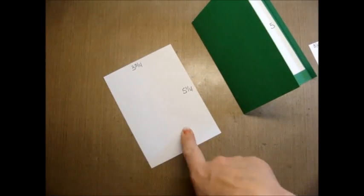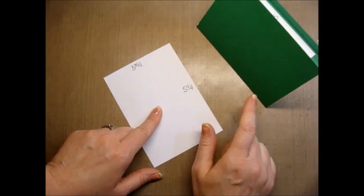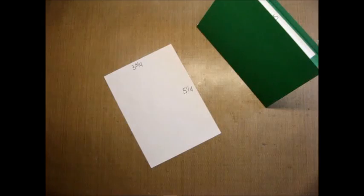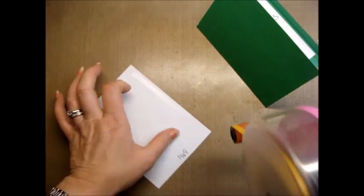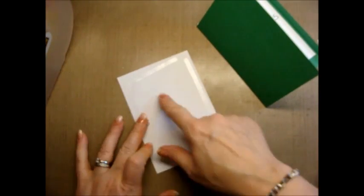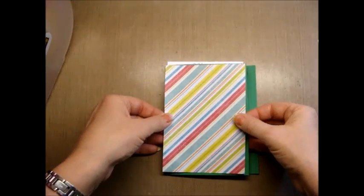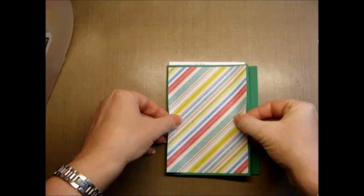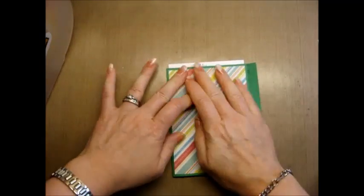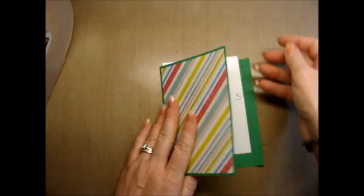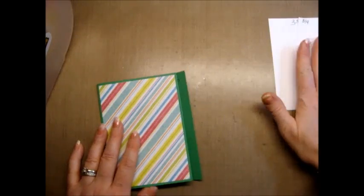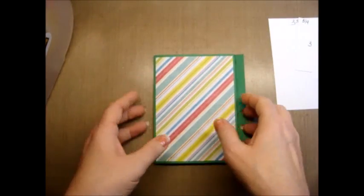First thing I'm going to do is go ahead and adhere this to the top of the card. And my ATG gun has escaped me. There he is. I'm going to go ahead and just put this down. And the reason why I'm doing this first is because I don't want to have to cut my slit twice. And I'm not putting a lot of tape on the center, if any, because when I cut it, I don't want it to get stuck to my cutter. So I'm going to put that right on the front of the card as centered as I can.